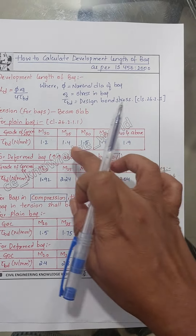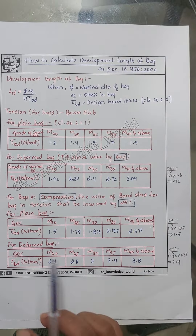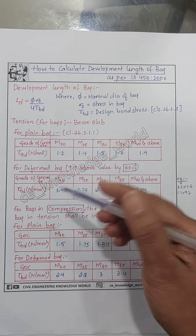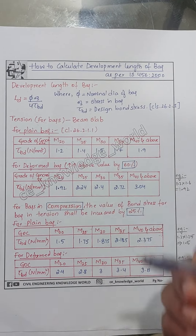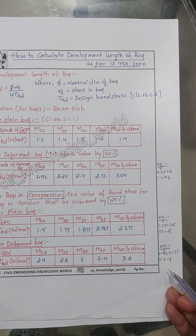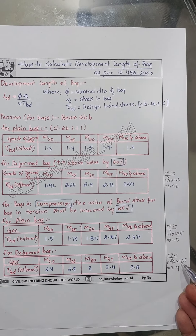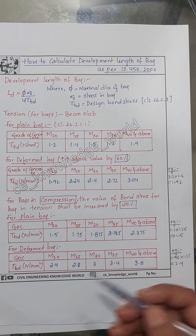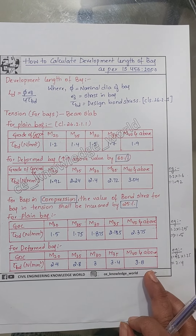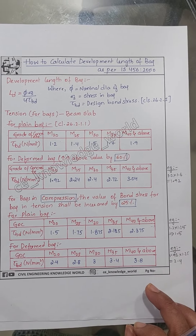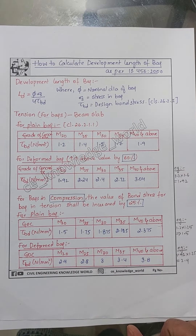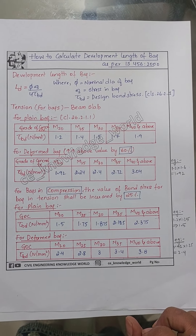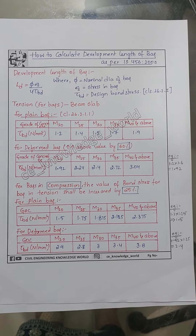For deformed bars in compression, we take 1.92 and increase by 25 percent: 1.92 × 1.25 = 2.4. Similarly, you can calculate for all the above grades of concrete. If you liked this video, please follow, like, share, and subscribe to this channel. Thank you.